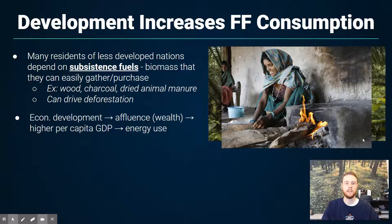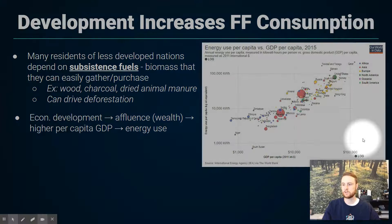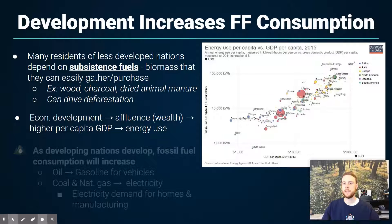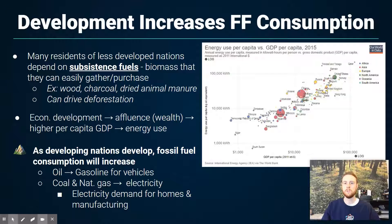As economies develop and affluence increases, residents start to demand and use more energy. This chart shows a strong positive correlation: as GDP — which can be thought of as personal wealth — goes up, per capita energy demand increases. The more wealthy a nation becomes, the more energy its citizens demand. As they demand more energy, they can no longer rely on subsistence fuels and transition primarily to fossil fuels — more oil for gasoline, and more natural gas and coal to produce electricity and heat larger homes.